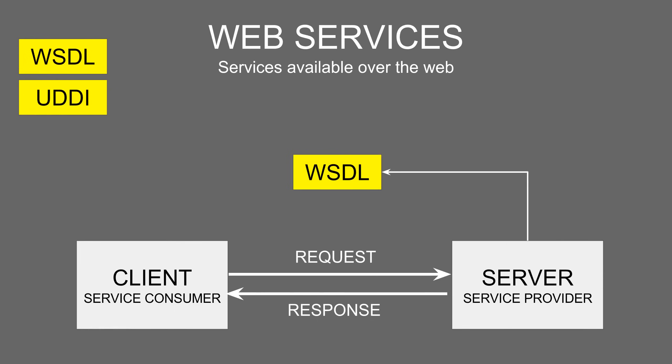WSDL is an interface for the web service. The service provider creates this interface, and the service consumer can get the WSDL and then use the web service. There are two ways a service consumer can get hold of the WSDL document. One way is if the service consumer and the service provider already know each other — the service provider can hand over the WSDL document or the WSDL URL directly to the client. The other case is when the service consumer and the service provider do not know each other — how can a consumer get hold of a WSDL document?